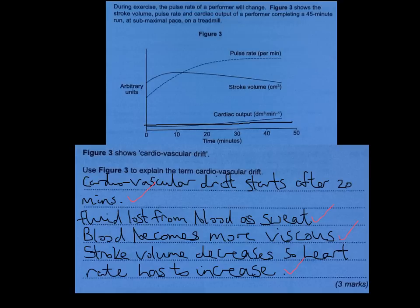A memory aid: cardiovascular drift is sometimes abbreviated to CV drift. Some people confuse it with Starling's Law of the Heart. Use the V in CV drift to stand for viscosity — this is the one where you lose water from the blood, the blood becomes more viscous, and then you're off with your answer. Use the V of cardiovascular drift to remind you there's a viscosity element: the blood has become thicker. Watch this video as many times as needed and use your book to answer questions on this topic.